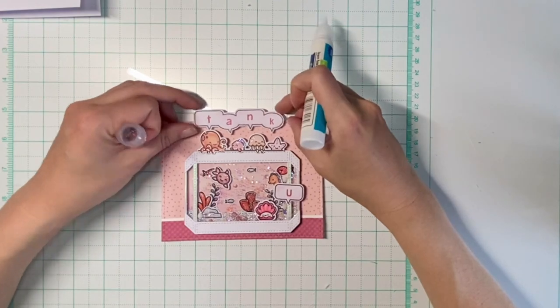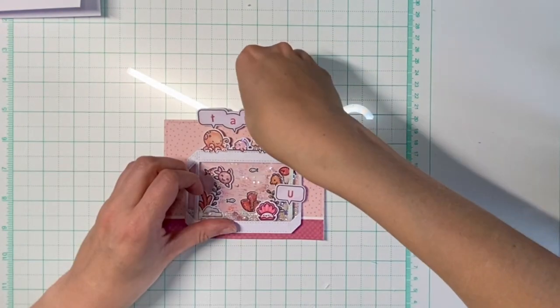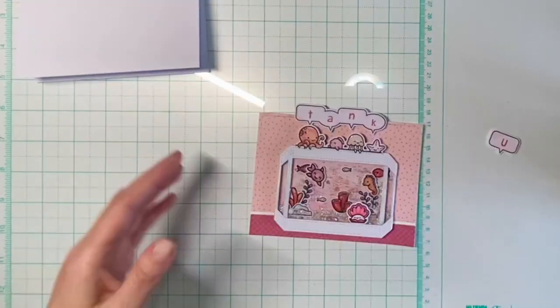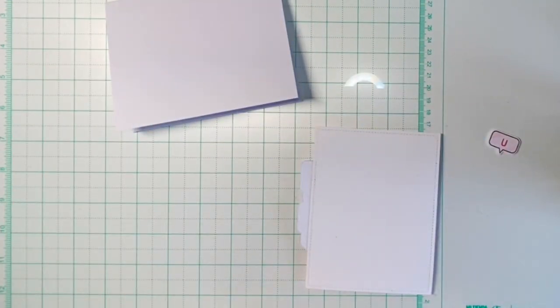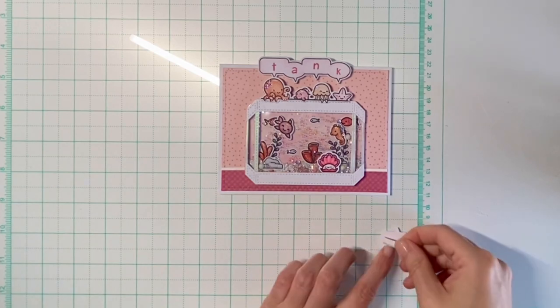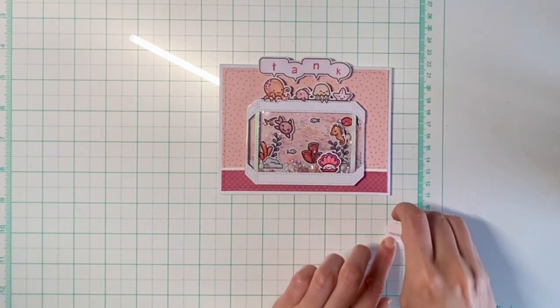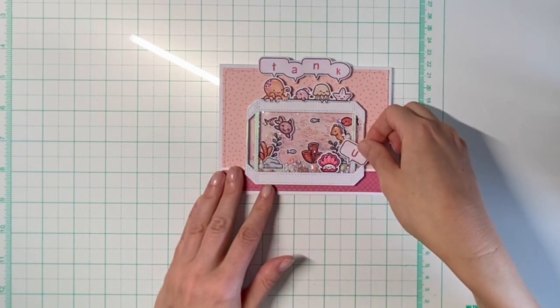And adhered that to the top of my card panel. Then I adhered my panel to the prepared card base using liquid glue, and finally adhering the individual speech bubble next to the shellfish using double-sided adhesive.